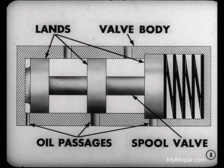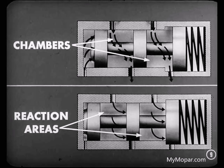Now, this is a spool valve. You'll notice that it has lands, or sections of larger diameter. These lands open, or close off, oil passages leading into or out of the valve body when the spool valve is moved back and forth. In between the lands are chambers, which can be used as oil passages. They can also be used as pressure areas, called reaction areas.